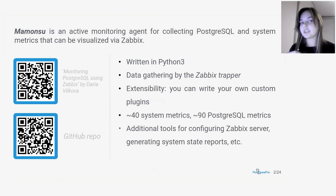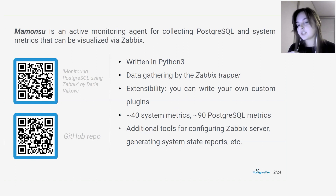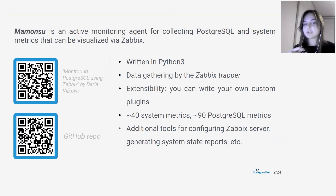Mamoncel is an active monitoring agent for collecting Postgres and system metrics that can be visualized via Zabbix. It is written entirely in Python 3 and has a plugin architecture. The agent works as follows: Mamoncel generates its own Zabbix template and sends data to the Zabbix server via Zabbix Trapper. We can collect about 40 system metrics and about 19 specific Postgres metrics.